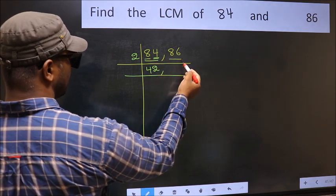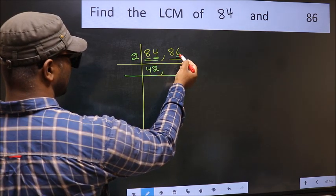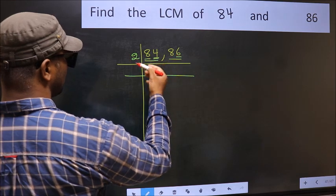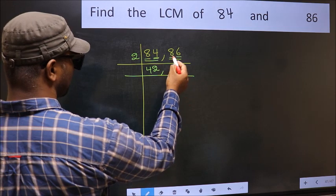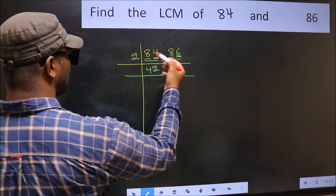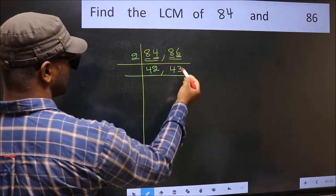Now the other number 86. Last digit 6 is even, so this is divisible by 2. First number 8. When do we get 8 in 2 table? 2 times 4 is 8. The other number 6. When do we get 6 in 2 table? 2 times 3 is 6.